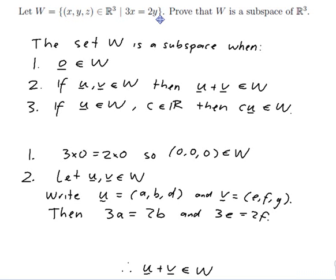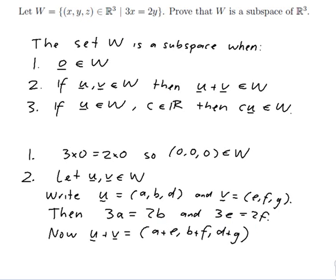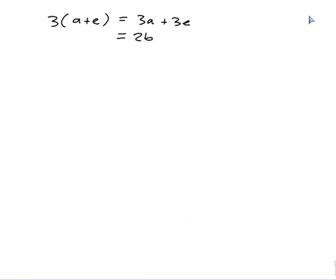I need to know what u plus v is in w, so now u plus v would be a plus e, b plus f, d plus g. And we want to show that 3 times the x coordinate is 2 times the y coordinate. So 3 times the x coordinate, that's 3a plus 3e. 3a is equal to 2b and 3e is equal to 2f, so let's put that in. 2b plus 2f and that's 2 of b plus f, so the equation works for this point. So therefore u plus v is in w, because it satisfies the equation that is the definition of w.